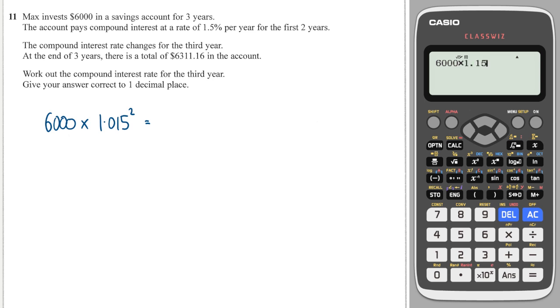After two years, we know there is £6,181.35 in his account. Then that money is multiplied by some multiplier we're not sure about, so let's call it x. That will give me a value of £6,311.16. To reverse this, I must divide both sides by 6,181.35.